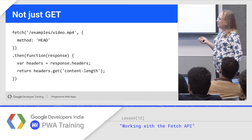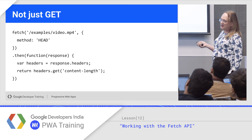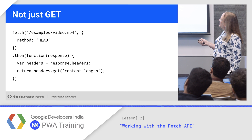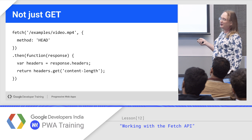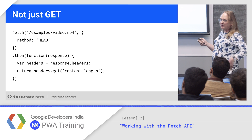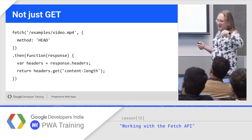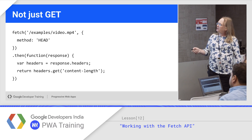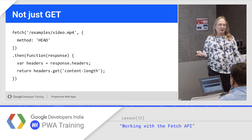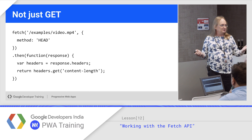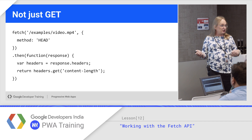Now it's not just GET. Fetch will do GET by default, but you can set method to any HTTP verb. So here we'll do a HEAD request where we just want the headers off an object — in the response, response.headers will be filled in and we can grab the content-length. You can do HEAD, POST, PUT, OPTIONS — anything you actually need to do.